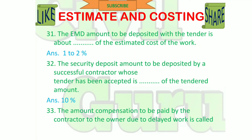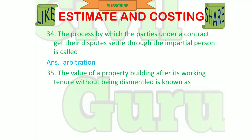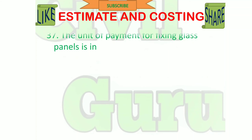The compensation to be paid by the contractor to the owner due to delayed work is called liquidated damages. The process by which parties under a contract get a dispute settled through an impartial person is called arbitration. The value of property after its working life without being dismantled is known as salvage value. The unit of measurement for steel work in trusses and its parts is quintal.